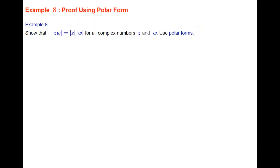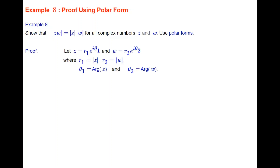We are required to show that the modulus of Z times W equals the modulus of Z times the modulus of W. Writing Z in polar form, we'll write it as R1·e^(iθ₁) and W in polar form as R2·e^(iθ₂), where R1 is the modulus of Z, R2 is the modulus of W, θ₁ is the argument of Z, and θ₂ is the argument of W.